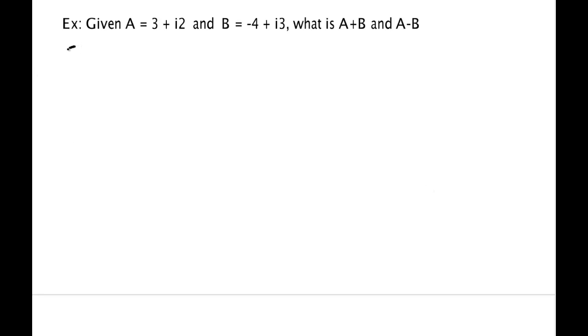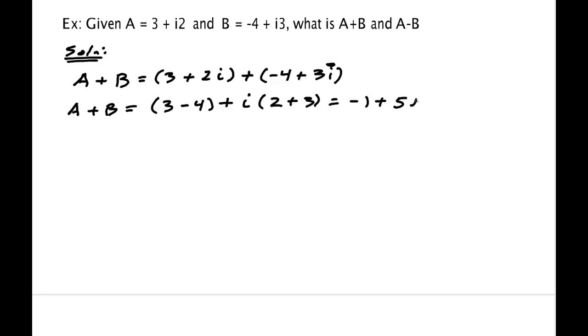Alright. So, the solution to this, which hopefully you've done previously, is that A plus B is 3 plus 2i. Notice, it doesn't matter whether you put the i in front, or the 2 in front, plus minus 4 plus 3i. And just like vectors, the real parts add together, and the imaginary parts add together. So, this is 3 minus 4, and in the i parts, it's 2 plus 3. So, the answer is minus 1 plus 5i. So, that's the answer to the addition.